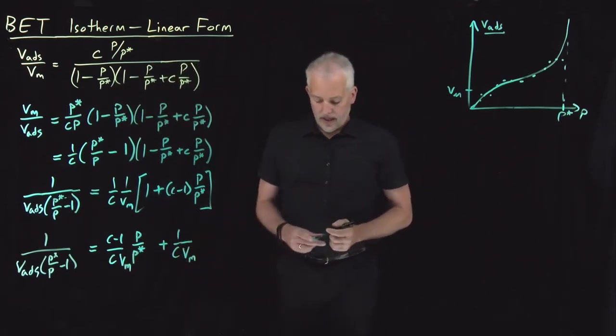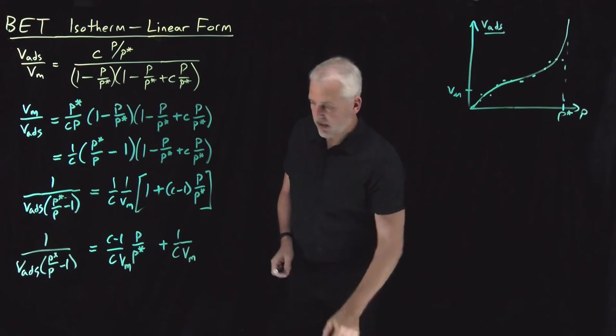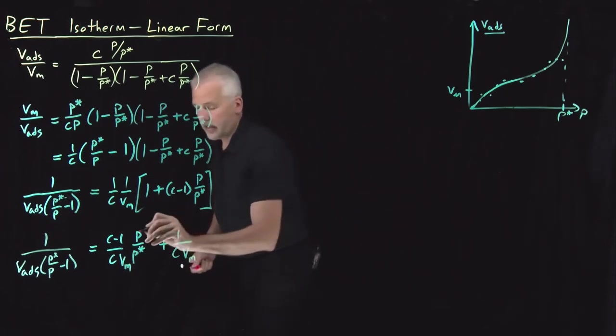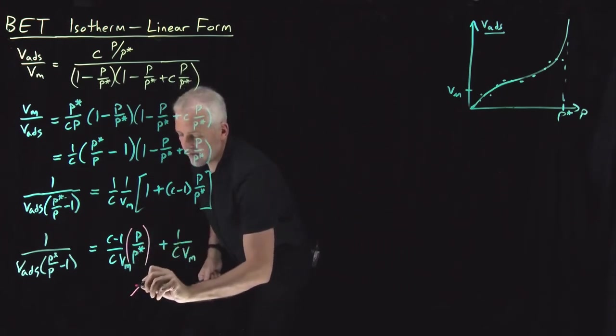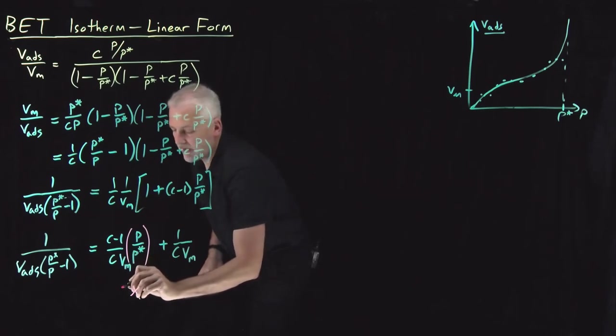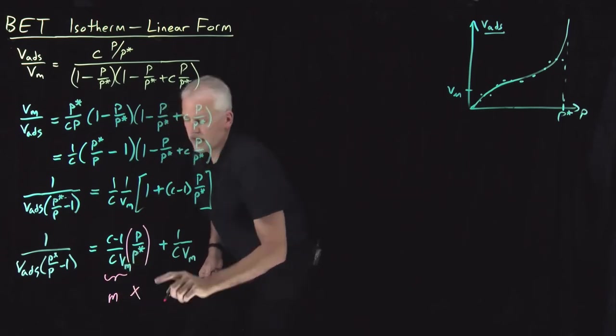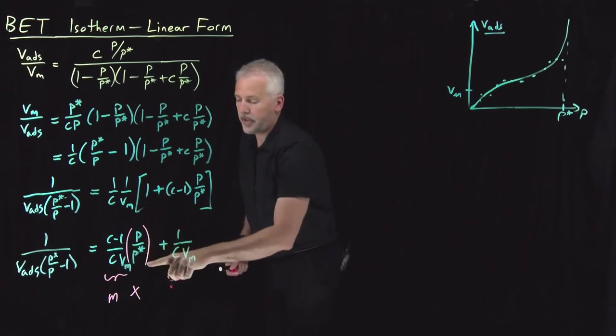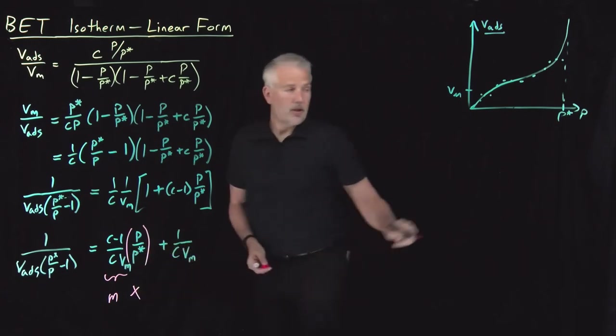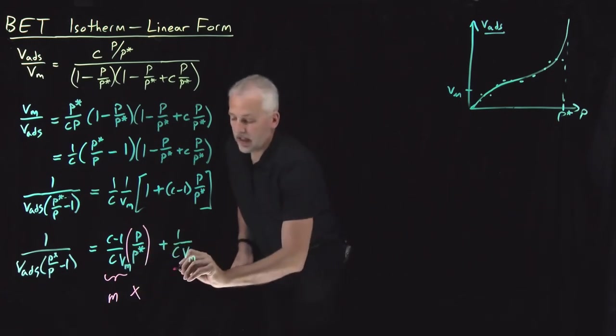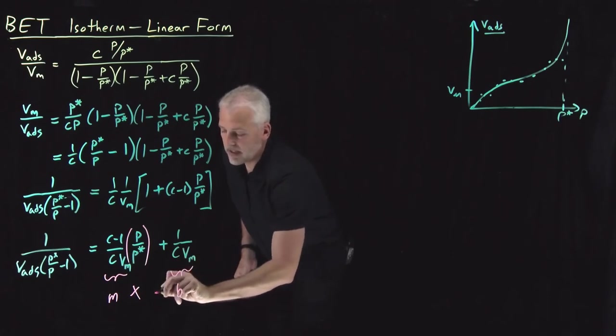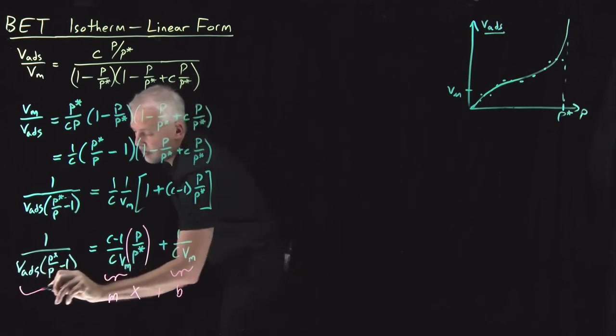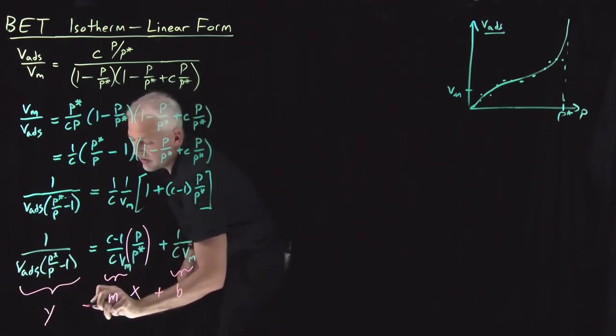Okay. That doesn't look pretty, but it does look linear. If this is my independent variable, I've got some constants times P over P star. That's the thing I'm going to use as my horizontal axis. I've got more constants here that I'll call B. And then this whole big, ugly thing is what I'll call Y.